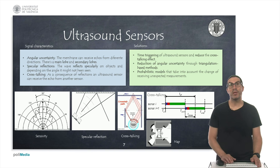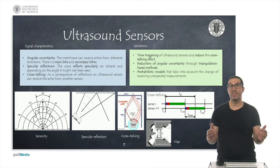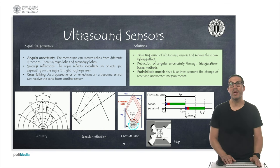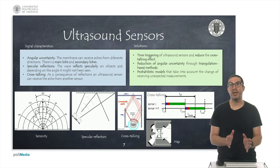Due to their operating principle, ultrasound measurements present a set of problems that we must take into account. The first of them is the angular uncertainty, that basically implies that the membrane can receive echoes from several different directions. We usually have some kind of main lobe, a range of angle and amplitude in which the sensor is clearly sensitive.